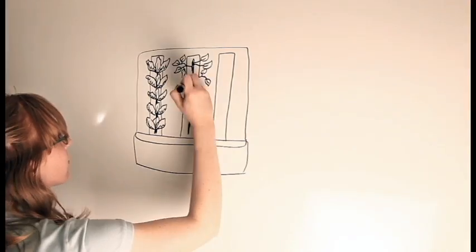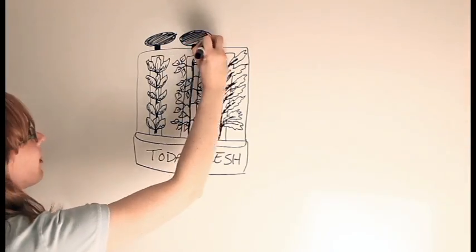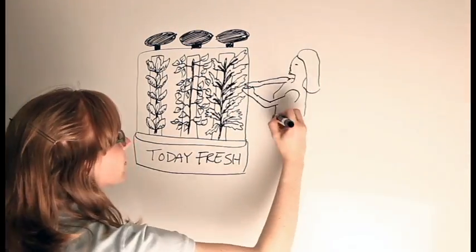The first batch of towers goes into a couple of grocery stores where people get to pick the produce they want from a display, taking home freshly harvested, nutrient-dense, flavorful food.